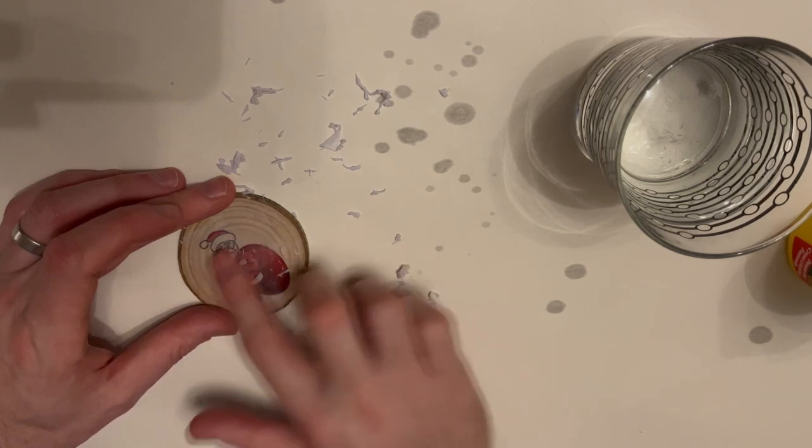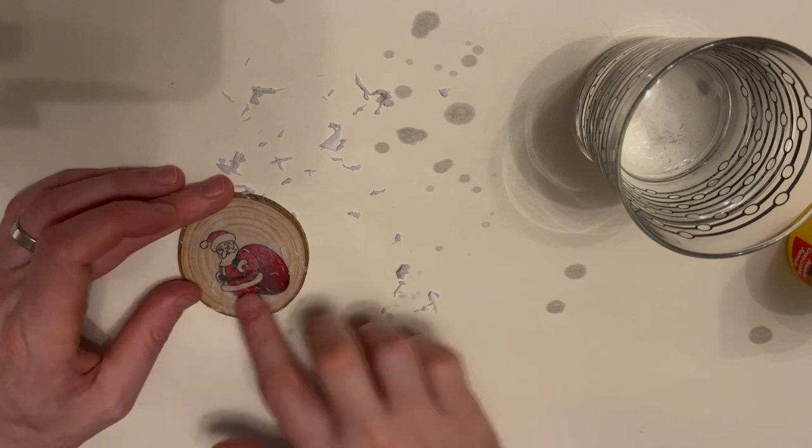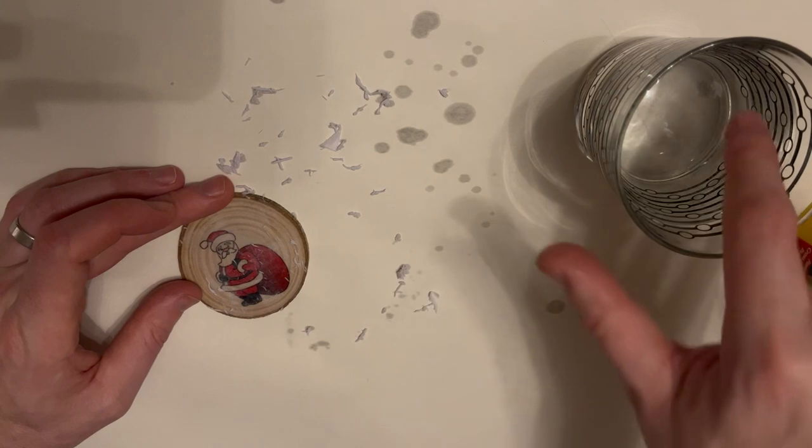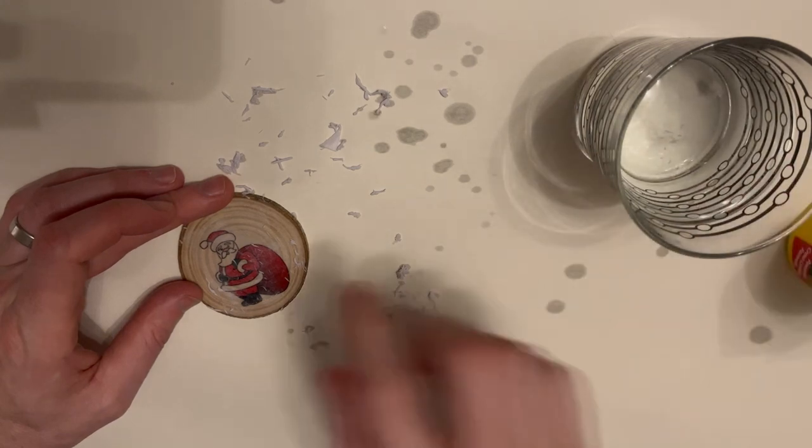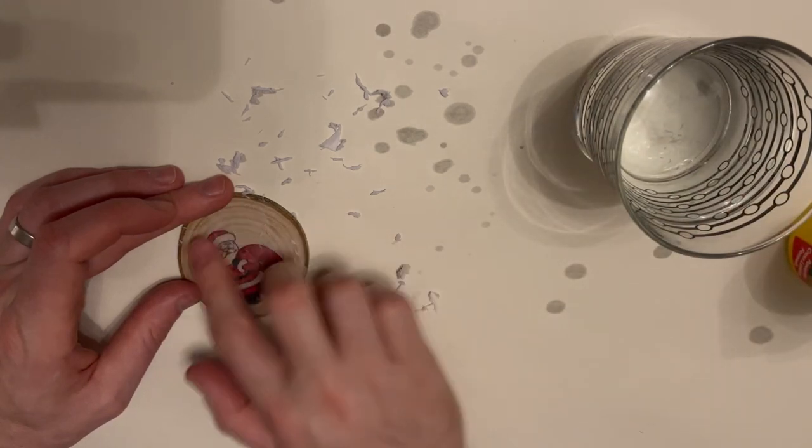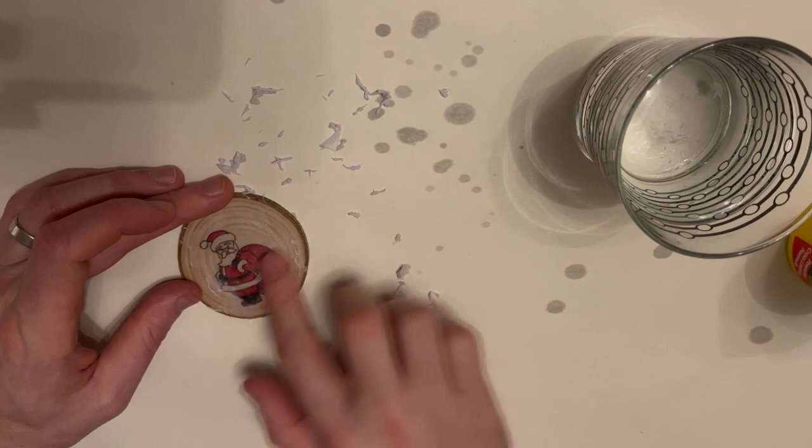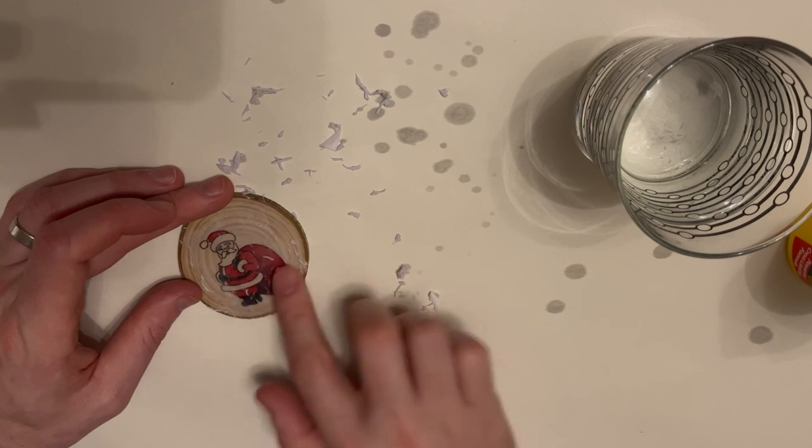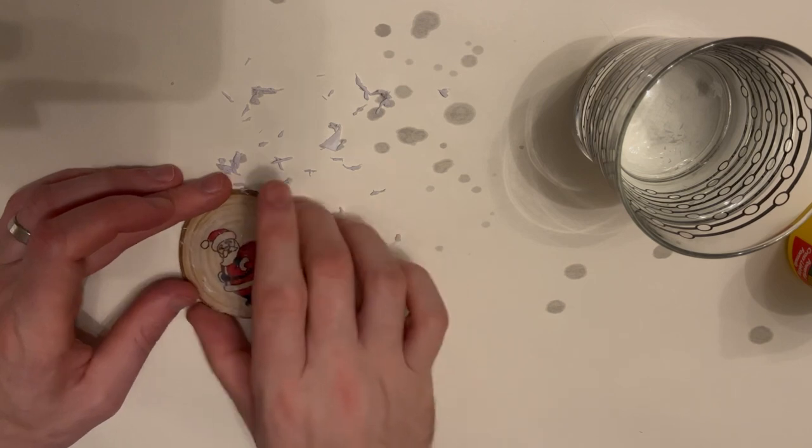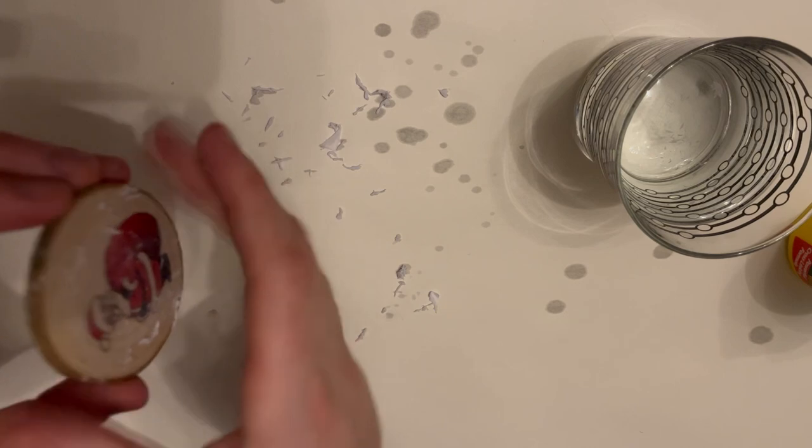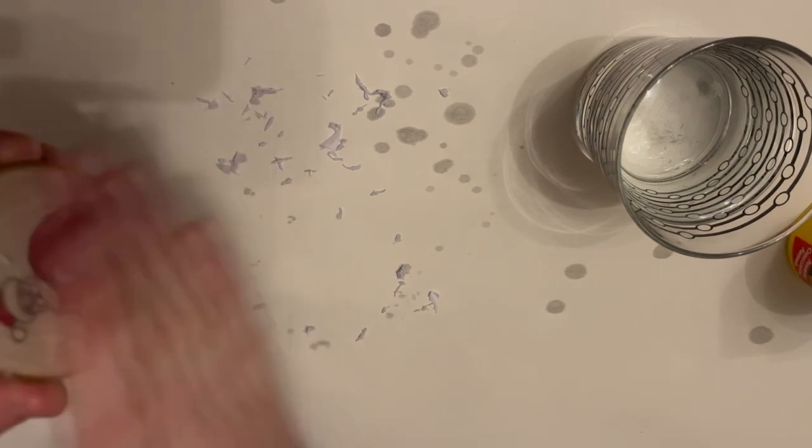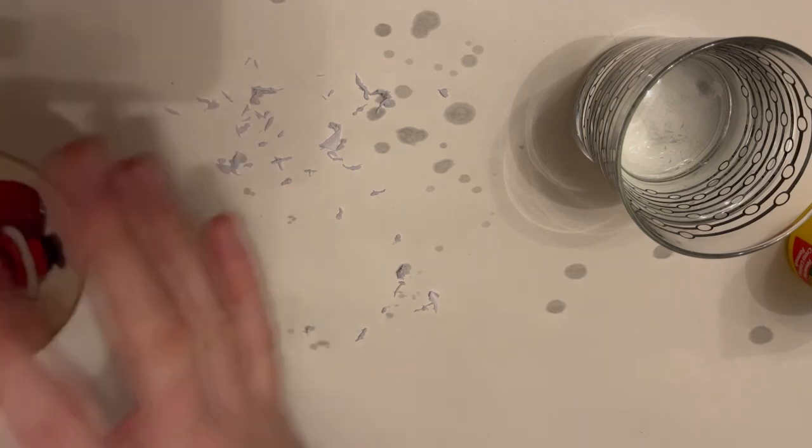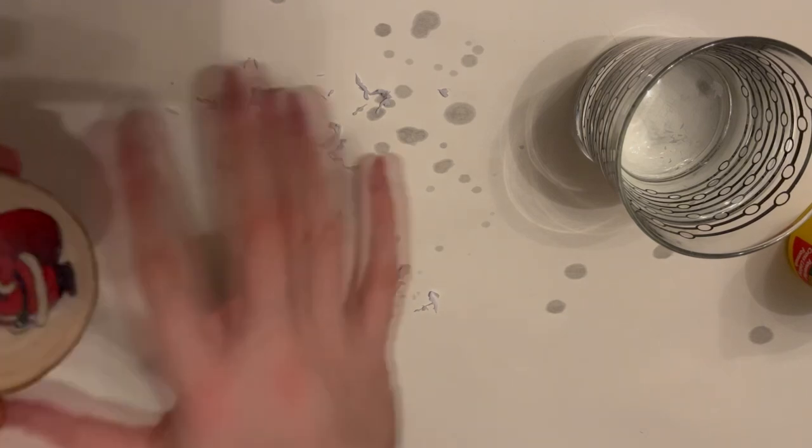If you start to see any of the ink coming off, that means you've gone too far or else you didn't glue the image down correctly. If the image isn't perfectly flat with no bubbles, then part of the image will not stick to the wood and you'll be left with blotches. You can do this with a light brush or just your hand and just lightly remove the paper off.